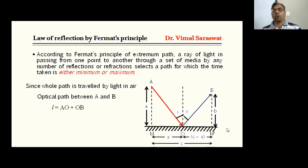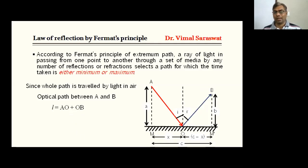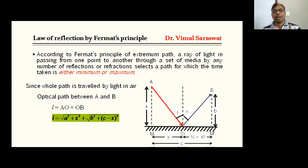Similarly, OB can be determined using the other triangle, so OB = √(b² + (c − x)²). Substituting the values of AO and OB, we get L = √(a² + x²) + √(b² + (c − x)²).